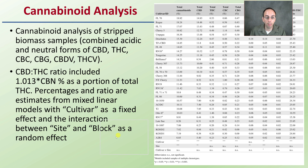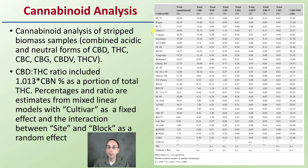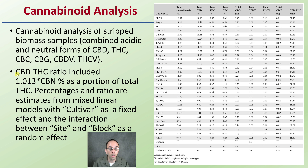Now we're looking at the cannabinoid analysis slide. You might want to look at the research, or just pause and take a look at it because there's some great information. This is the cannabinoid analysis of the stripped biomass samples, looking at the CBD-THC ratio, which included 1.013 times the CBN percentage as a portion of the total THC. Percentages and ratios are estimated using mixed linear models with cultivar as a fixed effect and the interaction between site and block as a random effect.